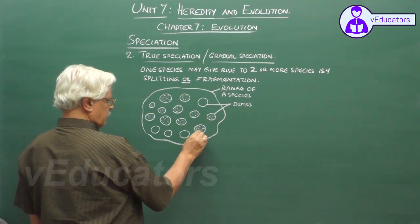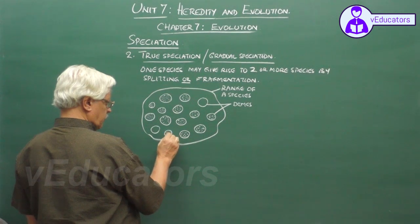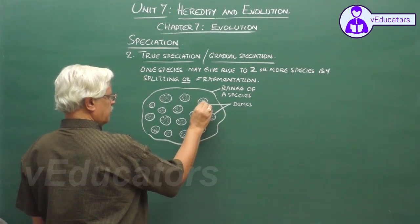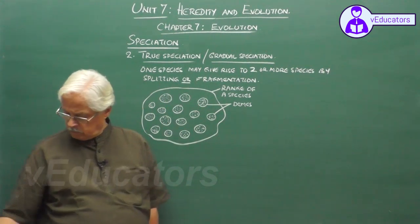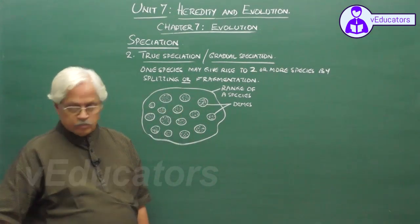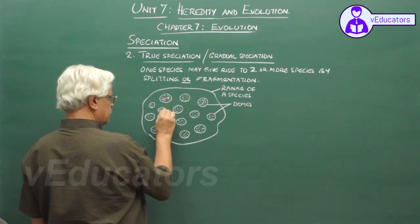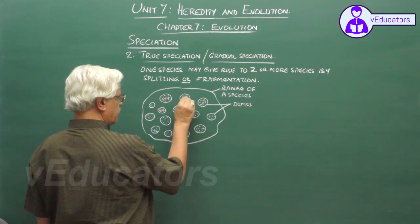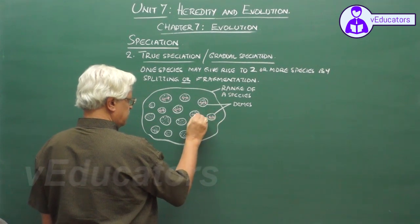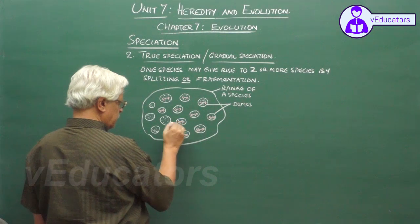Because all of them belong to the same species, between the members of the same species there will be a lot of interbreeding. Members may interbreed within the same deme — this is one possibility.